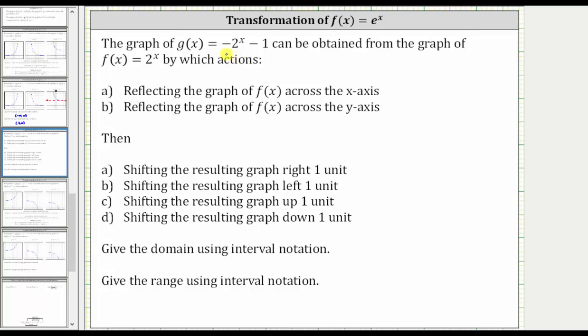The graph of g of x equals negative 2 to the power of x minus 1 can be obtained from the graph of f of x equals 2 to the power of x by which actions?